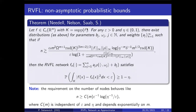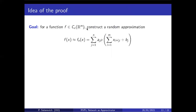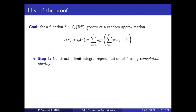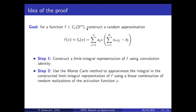Now I'll talk about how we prove this result at a high level. Our goal is to approximate f with a neural network f_n. We achieve this in two steps. In the first step, we construct a limiting integral representation of f. The idea is that if you convolve f with the Dirac delta function you get f back. We construct a sequence of functions approximating the Dirac delta, giving us a limiting representation — and then for this integral we apply a Monte Carlo method of approximation, which is where our random weights pop up from.